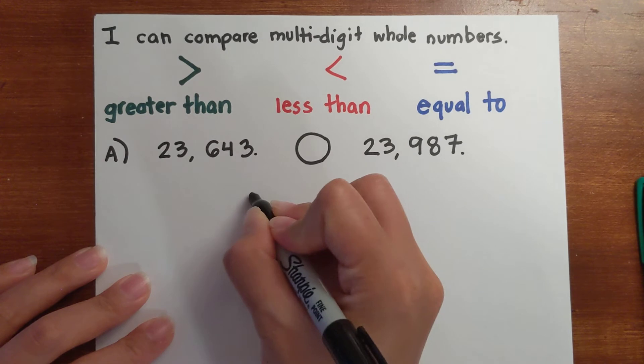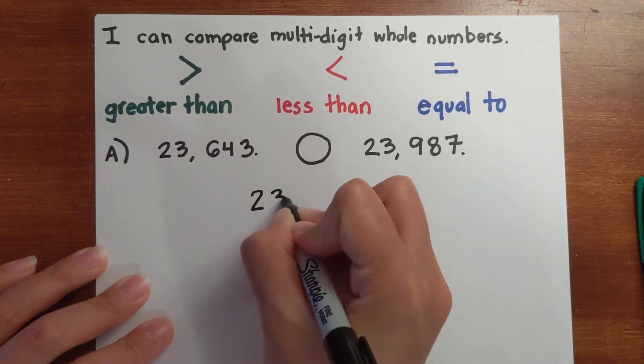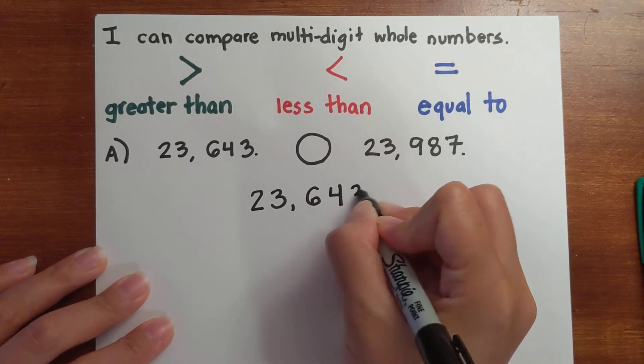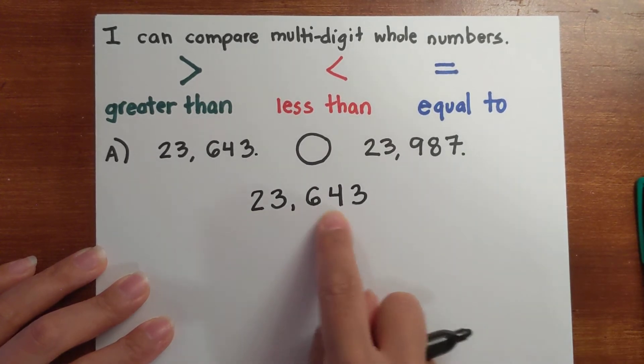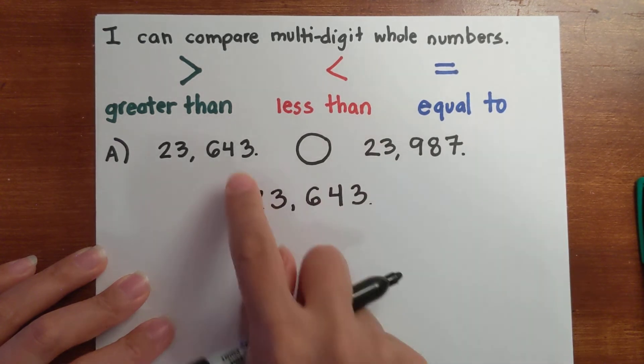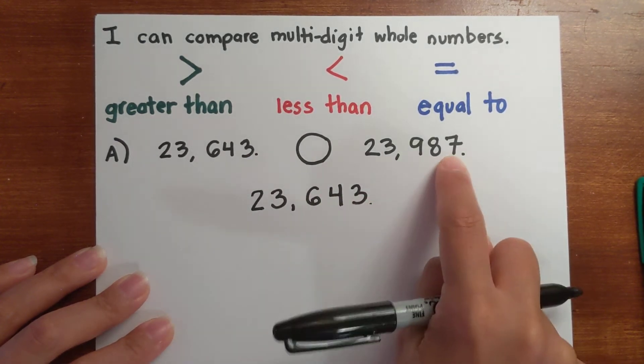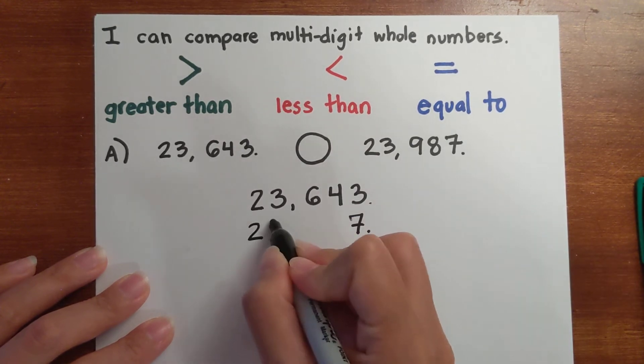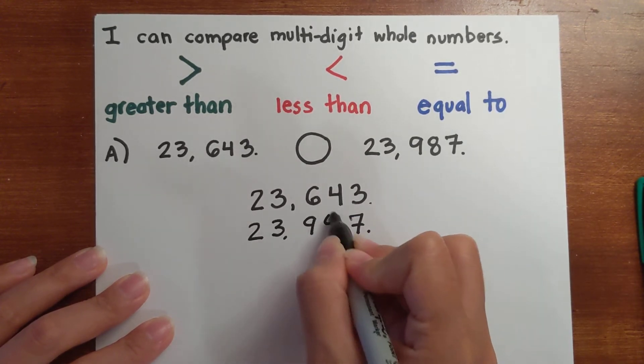So I'm going to start with writing out my first value, and I'm going to line up the two numbers so they are lined up according to their place value. So 23,643. I'm going to bring this down underneath and line it up, making sure the three is in the ones—the seven is in the ones—so 23,987.